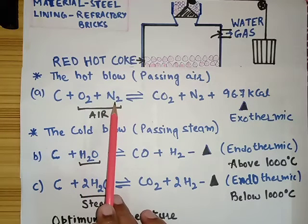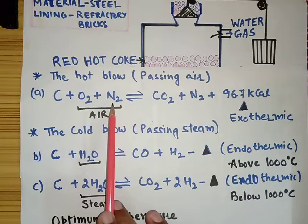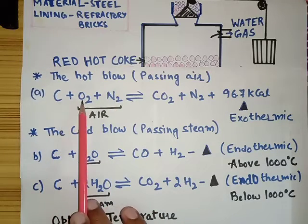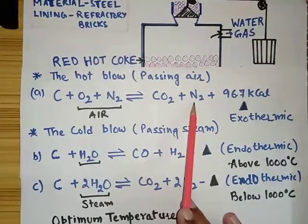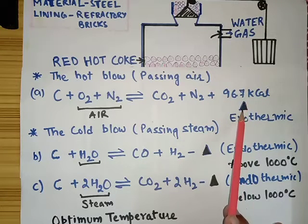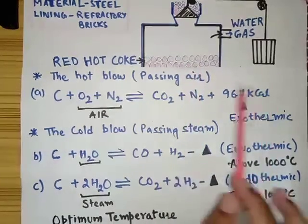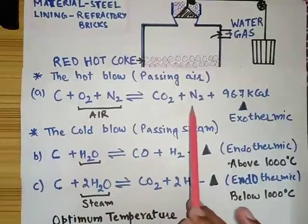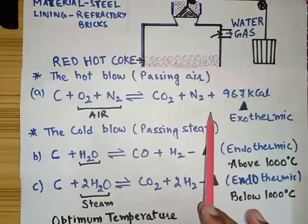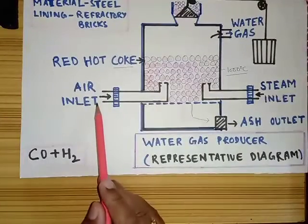Oxygen and nitrogen are supplied from the air. Nitrogen cannot be ignored because it comprises 78% of the air. Carbon and oxygen react to form carbon dioxide, and nitrogen does not react. The important thing is that this reaction is highly exothermic in nature and it releases a lot of energy. With the release of energy, the temperature of the coke rises to 1000°C. When reaction A happens on a large scale and the temperature rises to or above 1000°C, the supply of air is cut down.